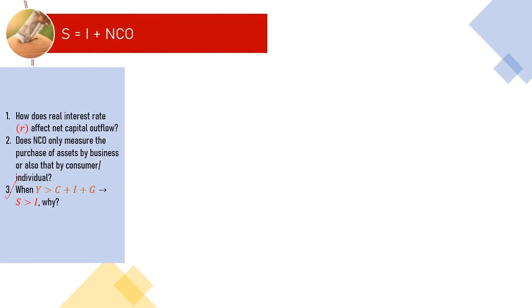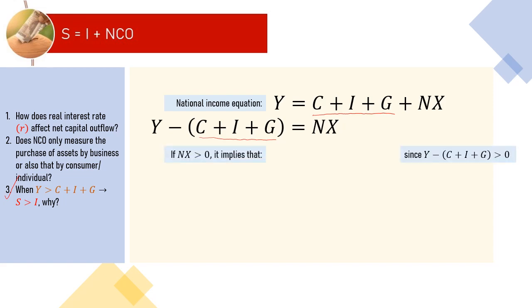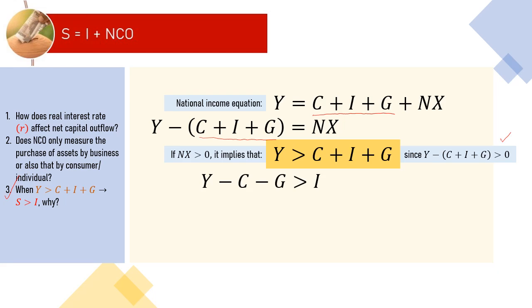Answering the third question is just a matter of adjusting the national income equation. In an open economy, national income is expressed by this equation. Moving the spending C+I+G to the left, the equation becomes: when NX is positive, the left side of the equation is positive. Therefore Y is bigger than spending. We may rearrange this inequality so that saving will be bigger than investment when Y is bigger than spending.